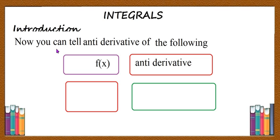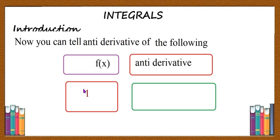Let us take the anti-derivative of some simple functions. What is the anti-derivative of 1? To think about the anti-derivative of 1, just think: 1 is the derivative of what? You know that derivative of x is 1, therefore anti-derivative of 1 is x.